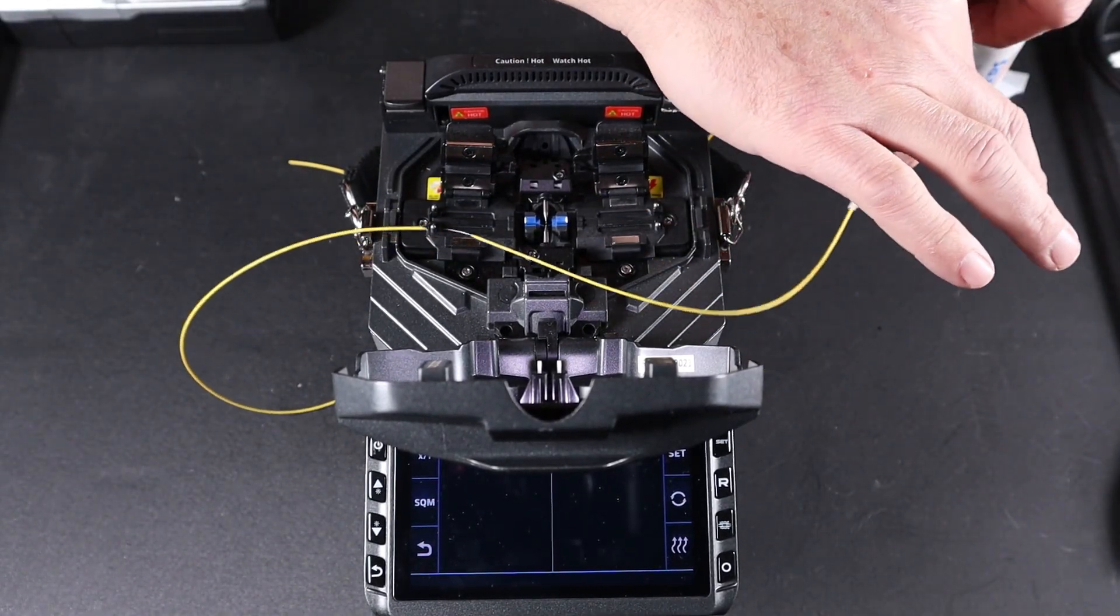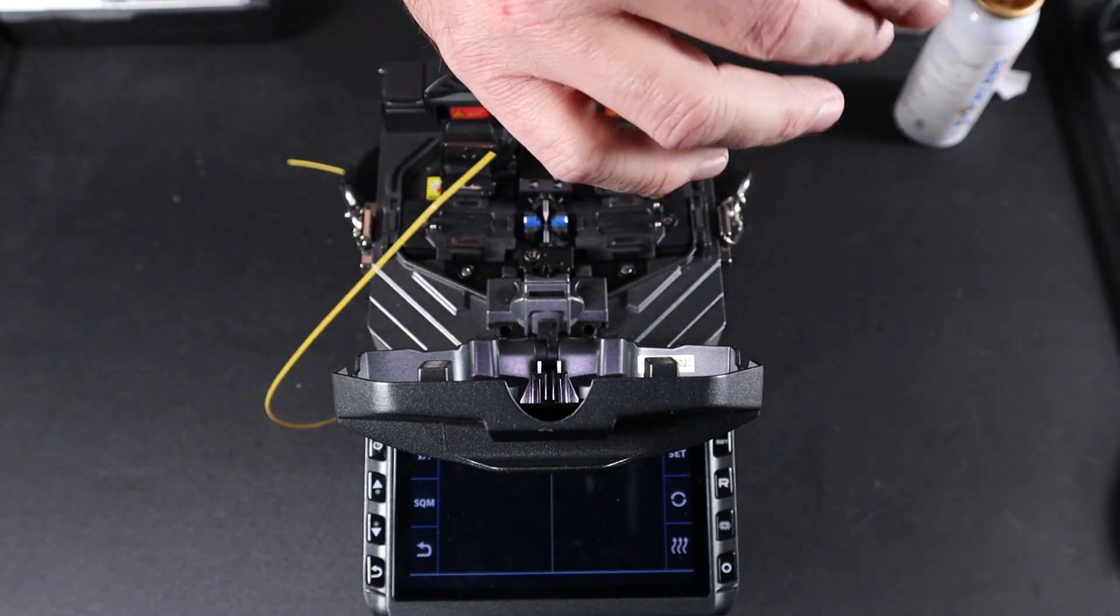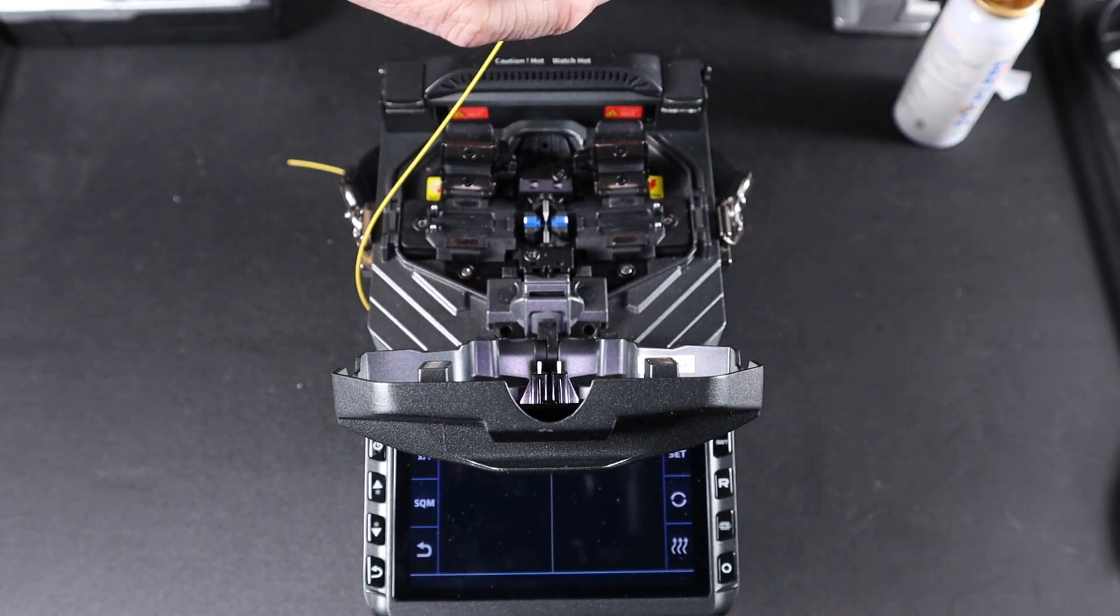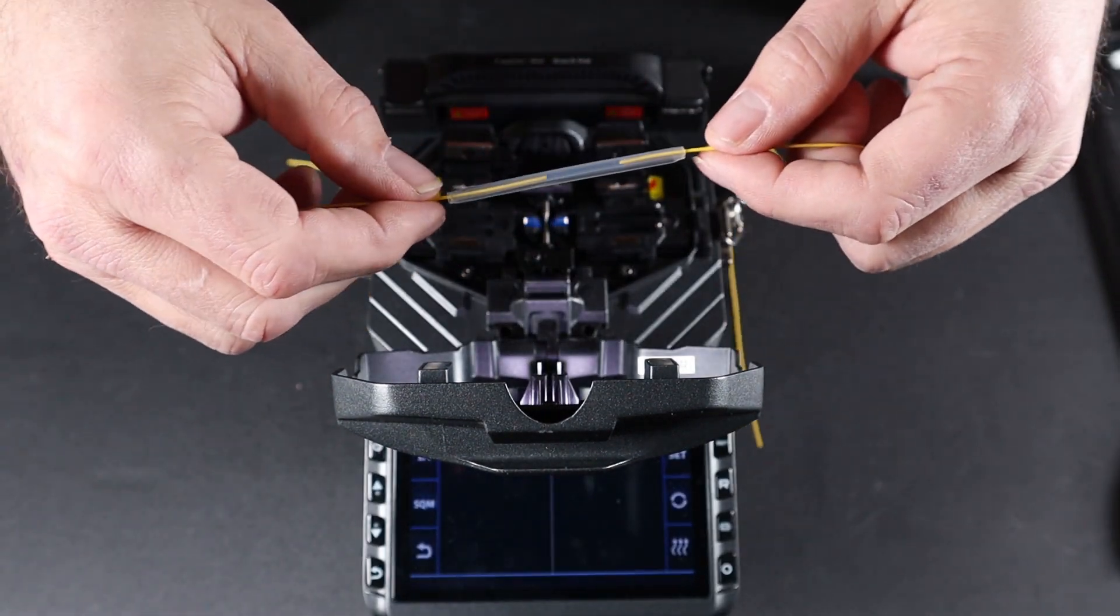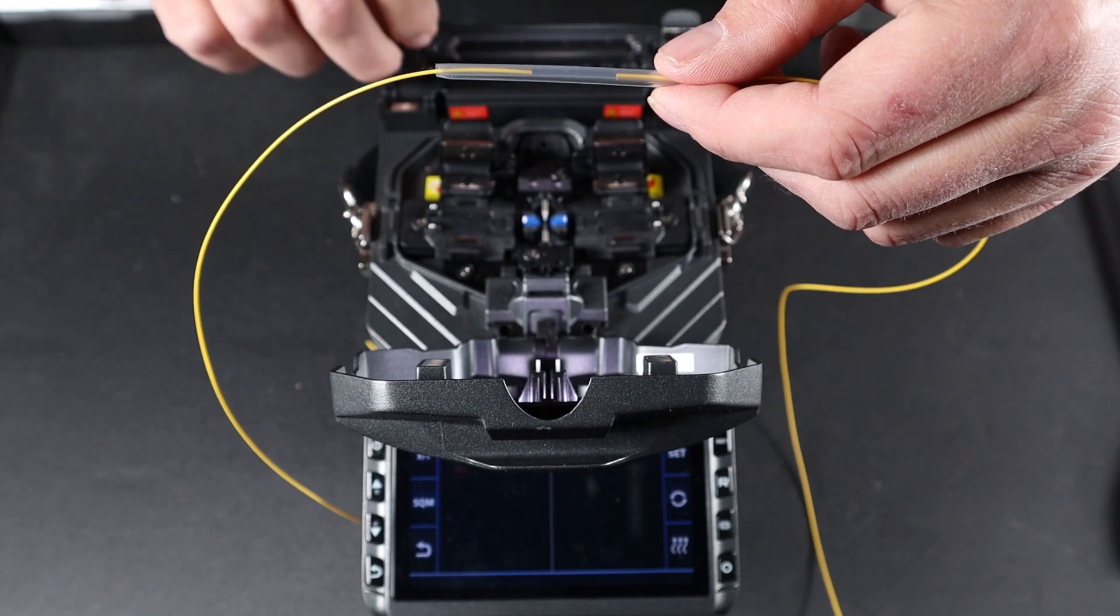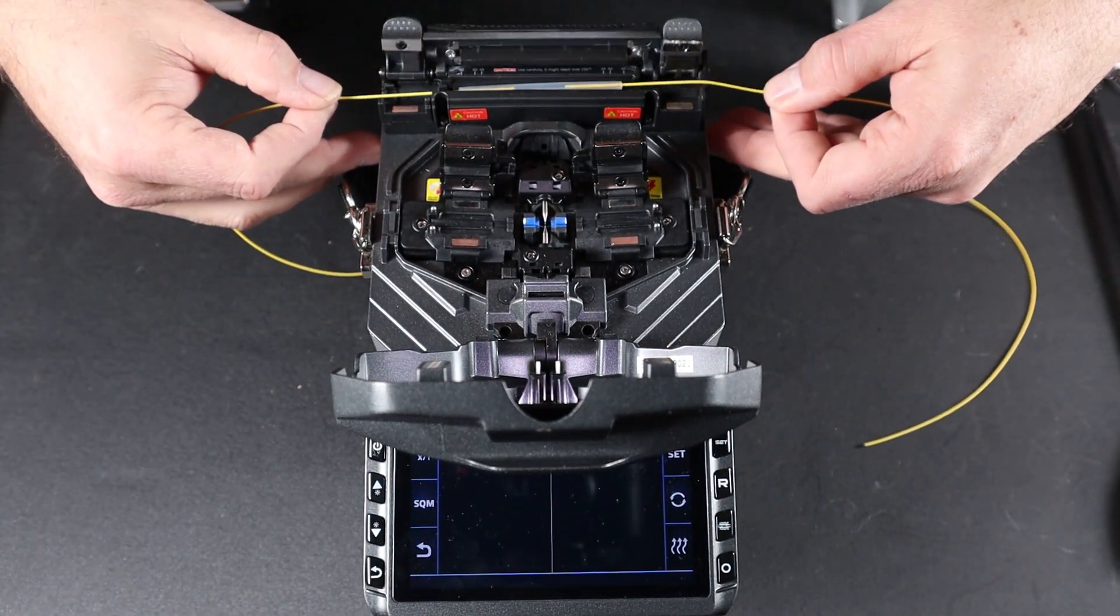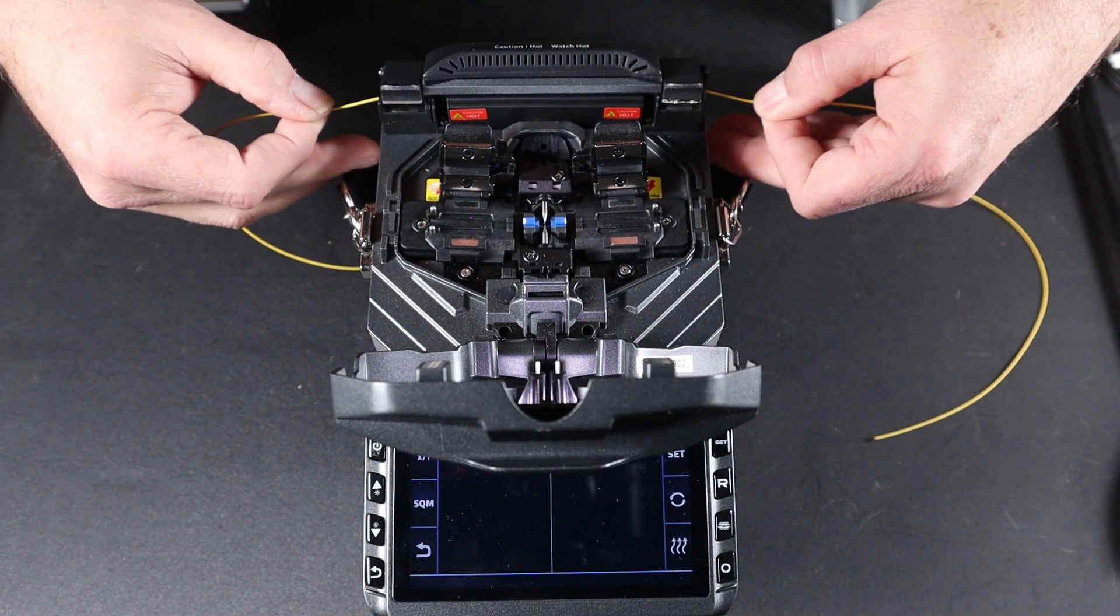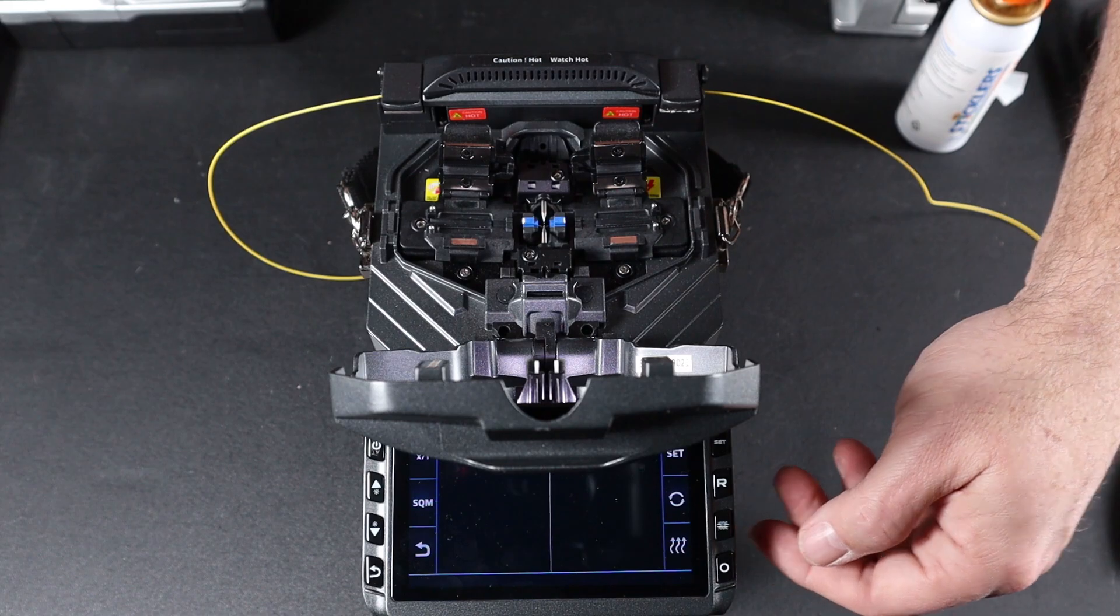Bring your heat shrink up, centering the splice in your shrink tube. Open your oven. Place your tube in the oven. Close and turn on your heater.